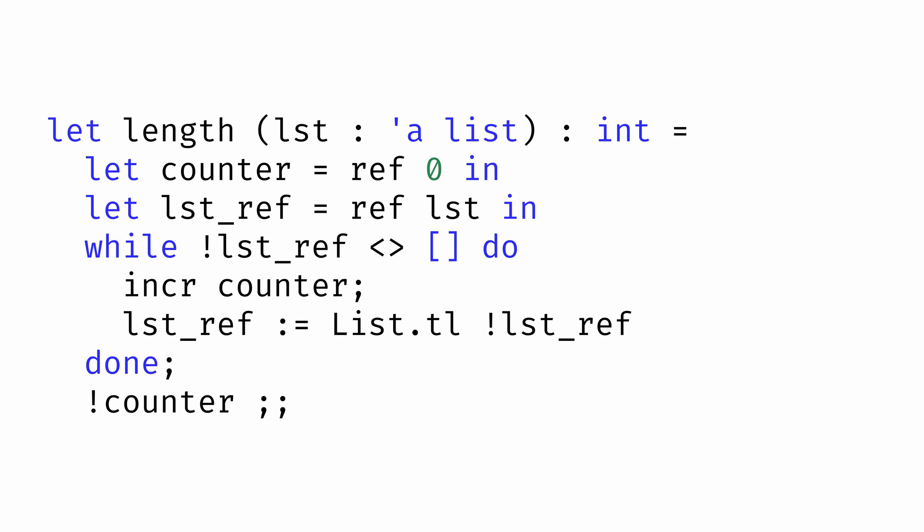Our function will update the counter to keep track of how many elements we've found, and we'll update the list reference to keep track of which elements are left to be processed. Now we have our loop. The loop will repeat as long as the value referenced by list ref isn't the empty list. In other words, as long as list ref references a list with at least one element.